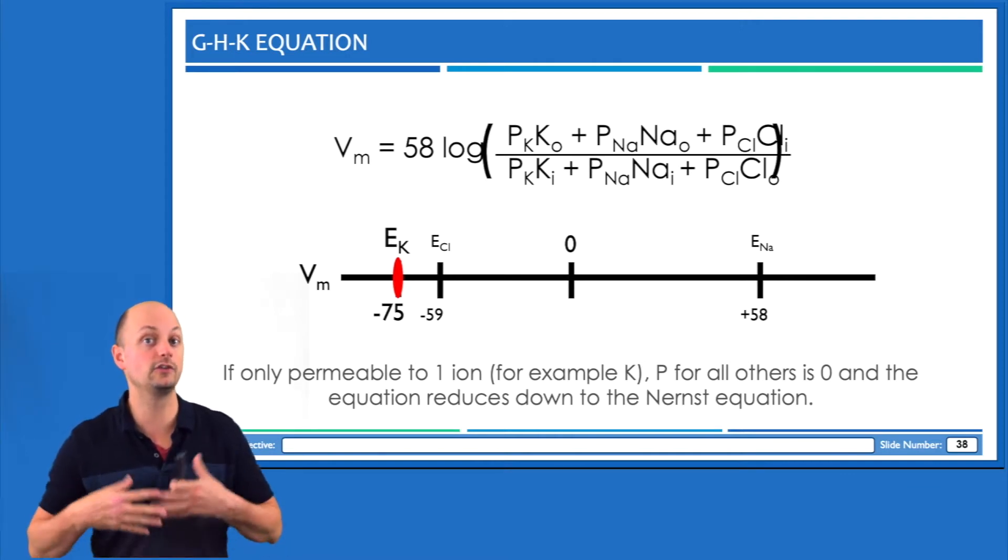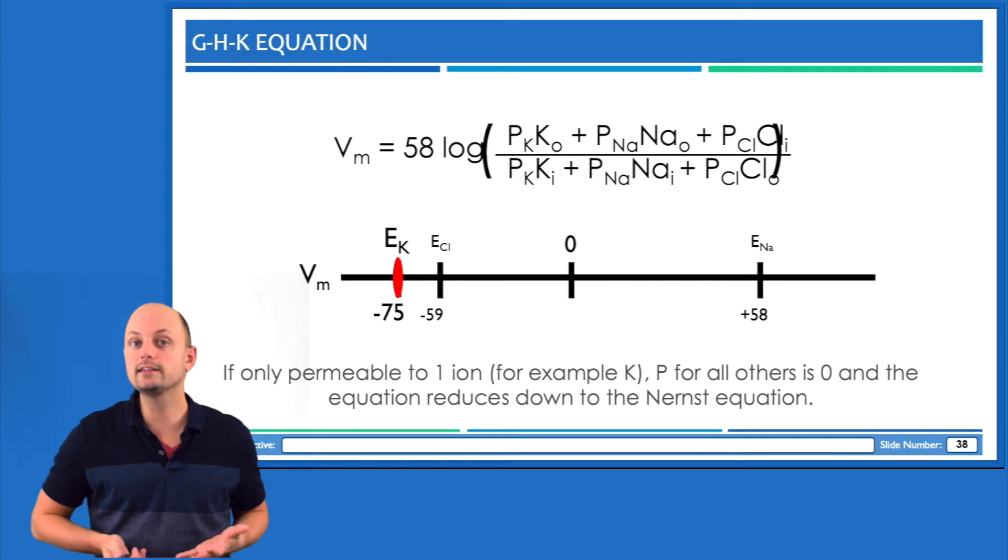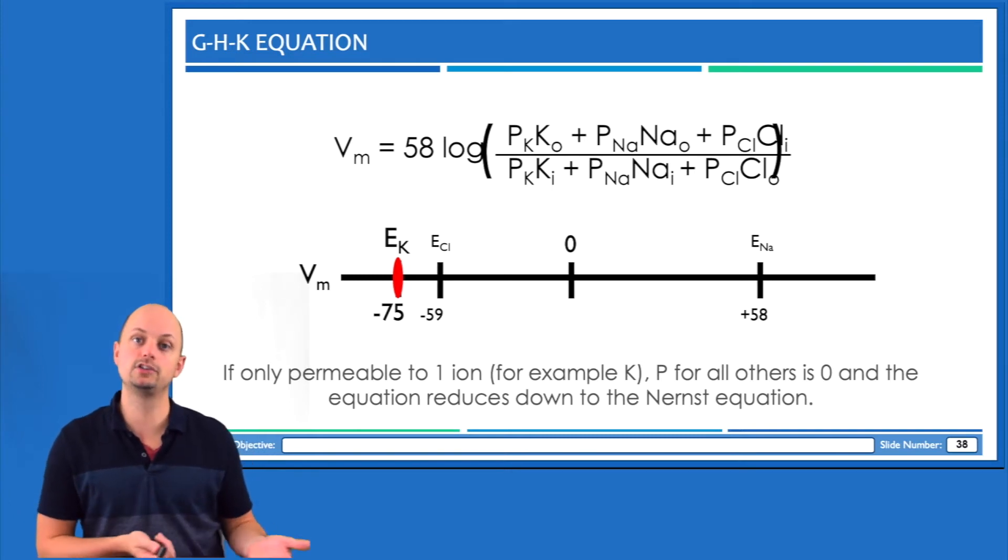Again, Nernst just assumes that we're completely permeable. We can really see this relationship between the Nernst and GHK equations if we make the permeability of two out of the three ions zero.